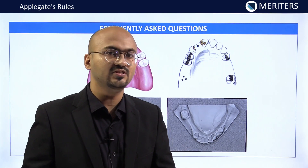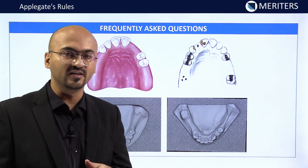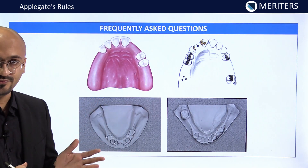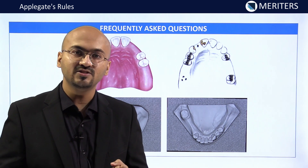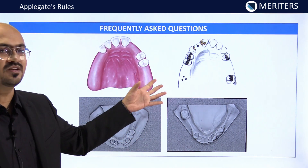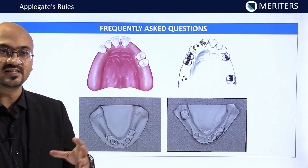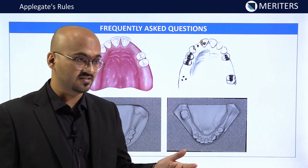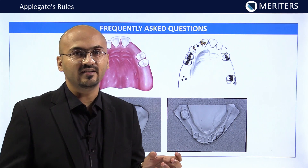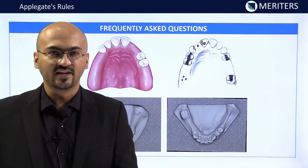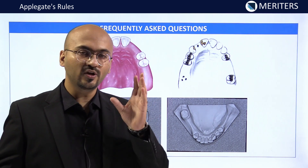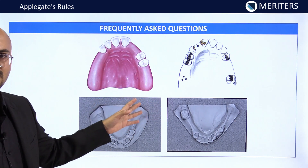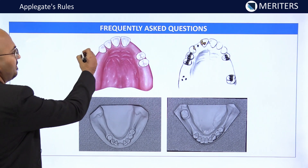So far we have seen the eight rules governing Kennedy's classification — these are known as Applegate's rules. From an exam perspective, Kennedy's classification case-based and image-based questions are frequently asked. You will be given one or two cast or model images and asked to determine the classification. In some cases you may be asked to determine the design for a given class, so understanding and applying Applegate's rules is essential.